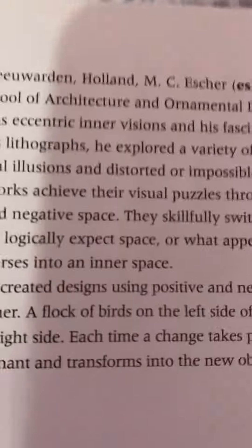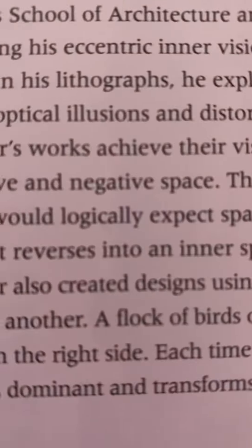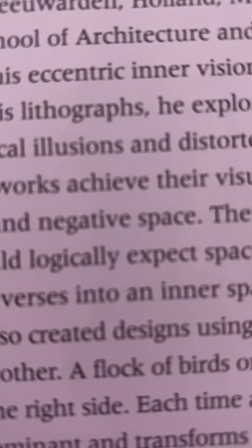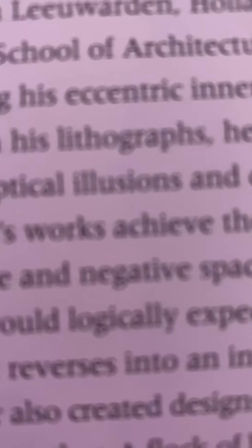Understanding the relationship of space to shapes and forms involves positive and negative spaces. In two-dimensional art, positive space is the figure. Empty spaces between shapes or forms are called negative space, or ground. The shape and size of a negative space affects the way you interpret positive spaces.